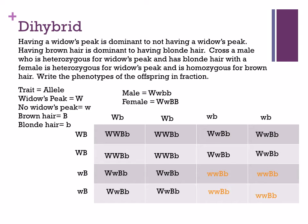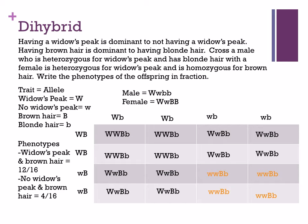Now we're going to find the phenotypes. All the boxes with black letters inside the Punnett square have either a capital W and a capital B — so they have widow's peak and brown hair. Counting those boxes gives 12 out of 16. The boxes in orange all have lowercase w's, representing no widow's peak, and at least one capital B, representing brown hair — so that's 4 out of 16 for no widow's peak and brown hair.